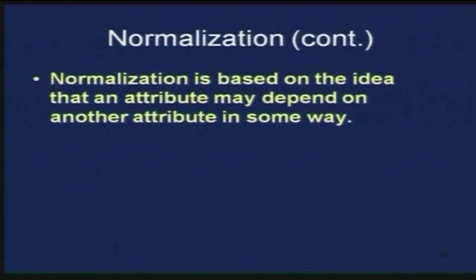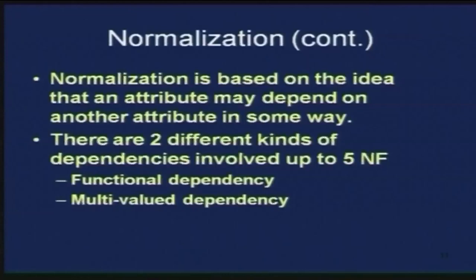If you take a relation associated with an entity, the attributes associated with that entity will depend on each other in some way. Depending on this, there are two different kinds of dependencies: functional dependency and multi-valued dependency. These dependencies go up to the fifth normal form. The fundamental one is functional dependency. Normal forms can be based on primary keys, on functional dependency, or on different things. We are going to look at normal forms based on primary keys first.